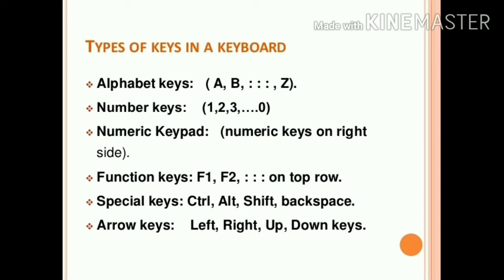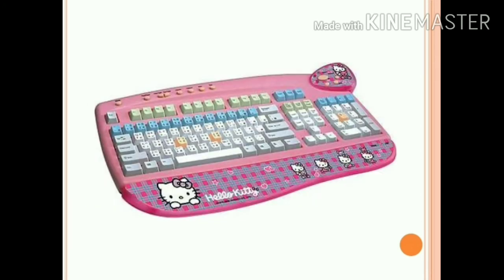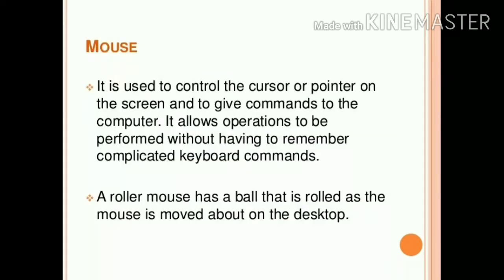And next are arrow keys: Left, Right, Up, Down — jo ki hume left, right, up, down karne mein help kerti hai. These are all the keys present on a keyboard which help us to write text on a screen. As you can see in this picture, there are so many keys on a keyboard which help us to write text on a screen.